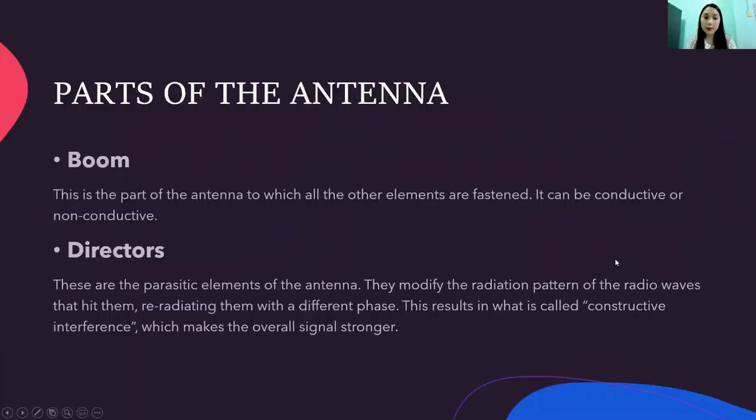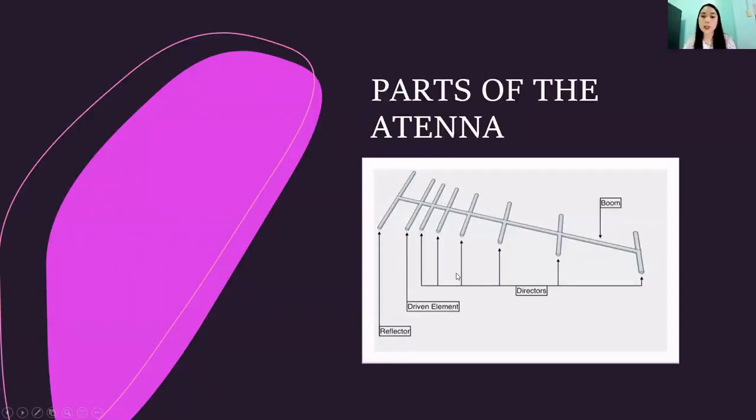So, next is the directors. These are the parasitic elements of the antenna. They modify the radiation pattern of the radio waves that hit them, re-radiating them with a different phase. This results in what is called constructive interference, which makes the overall signal stronger. So, again, let's look at the picture. So, these five shortest pieces in the antenna are the directors. So, they are the parasitic elements of the antenna, and they make the signal stronger.